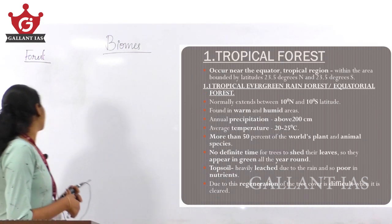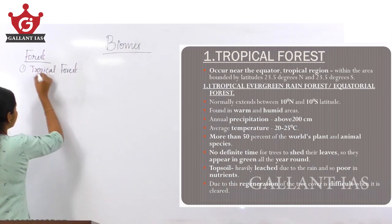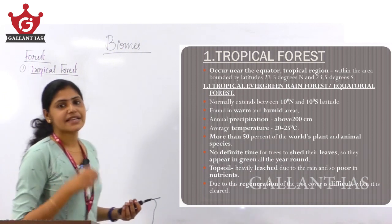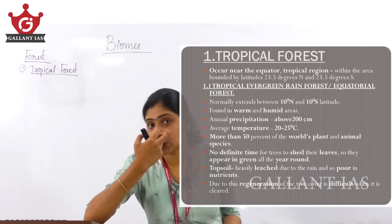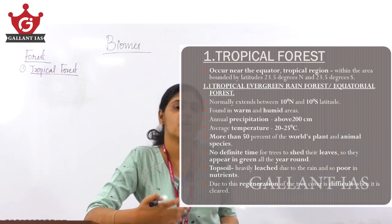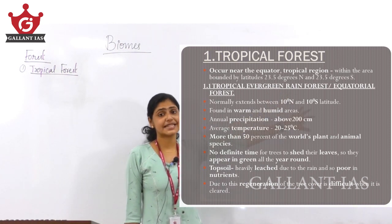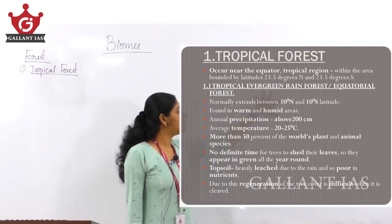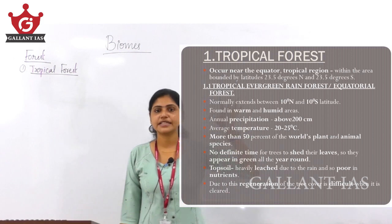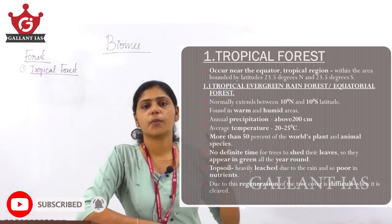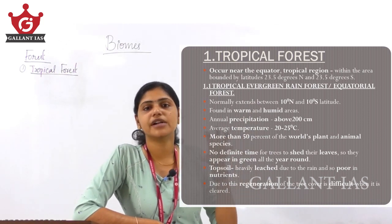The first type of forest is tropical forest. As the name suggests, these forests are present in the tropical region, near the equator. They occur within the area bounded by latitudes 23.5 degrees north and 23.5 degrees south — that is, between the Tropic of Cancer and the Tropic of Capricorn, which is what we call the tropical region.